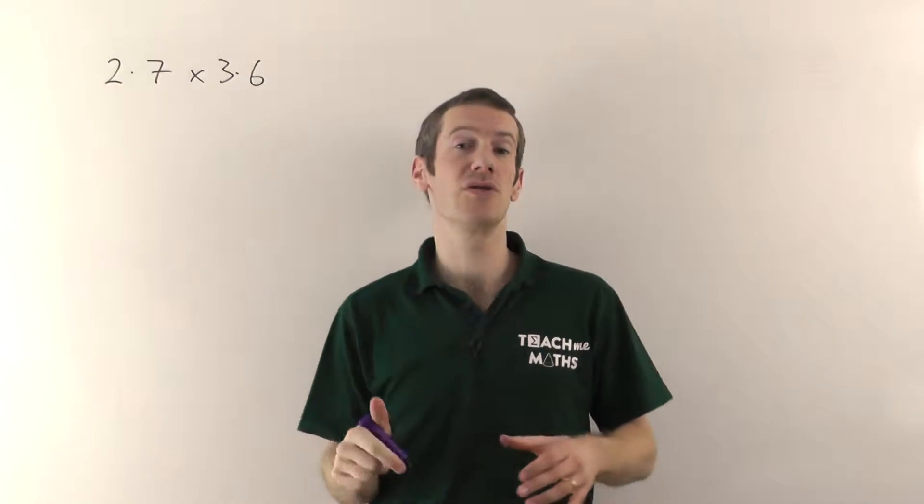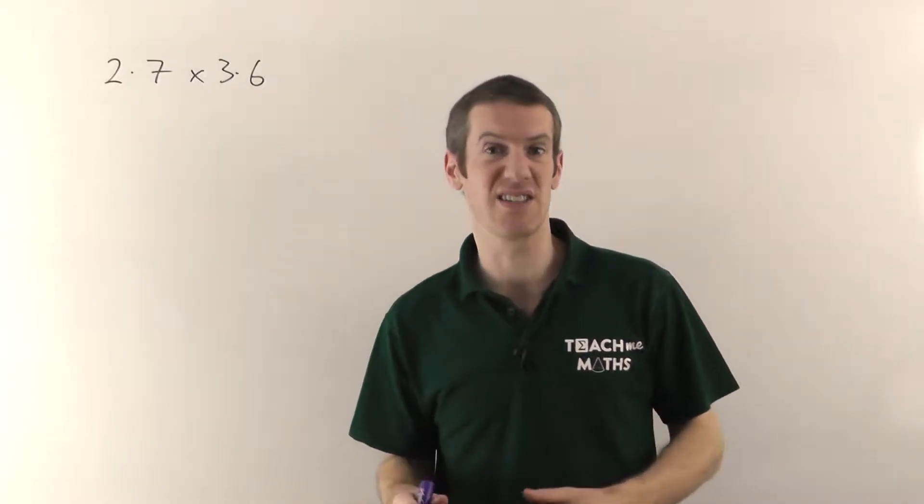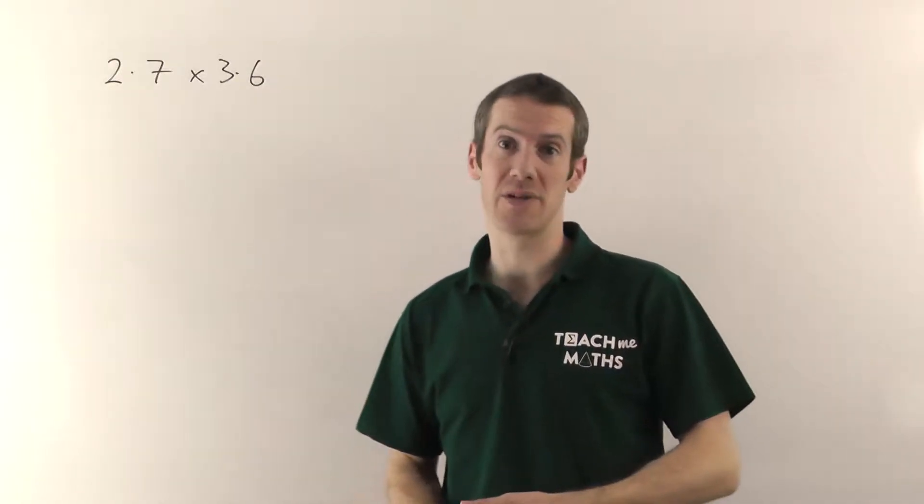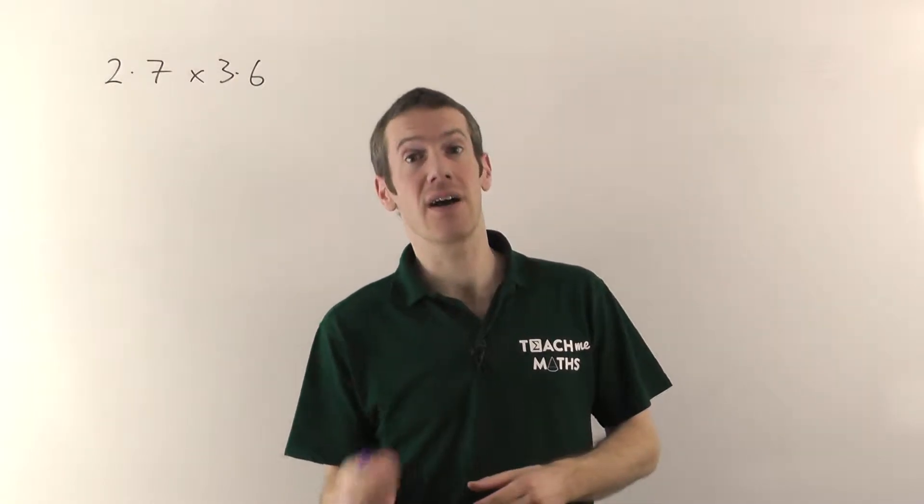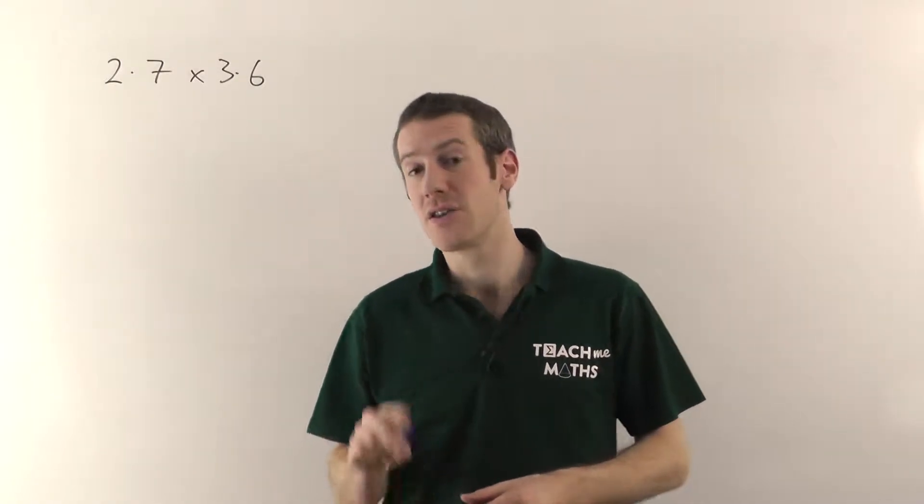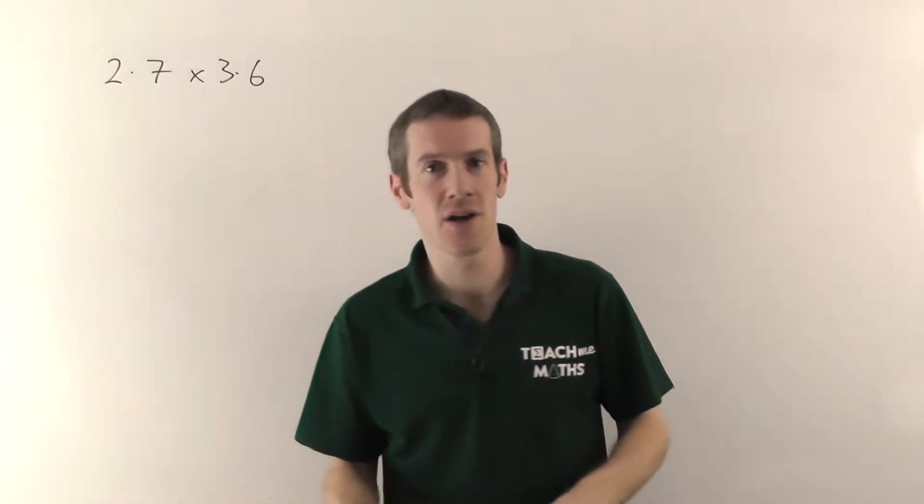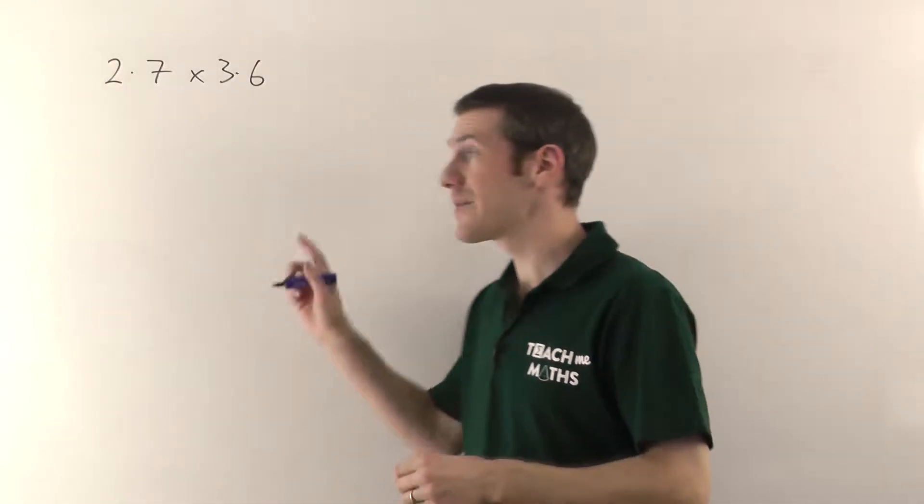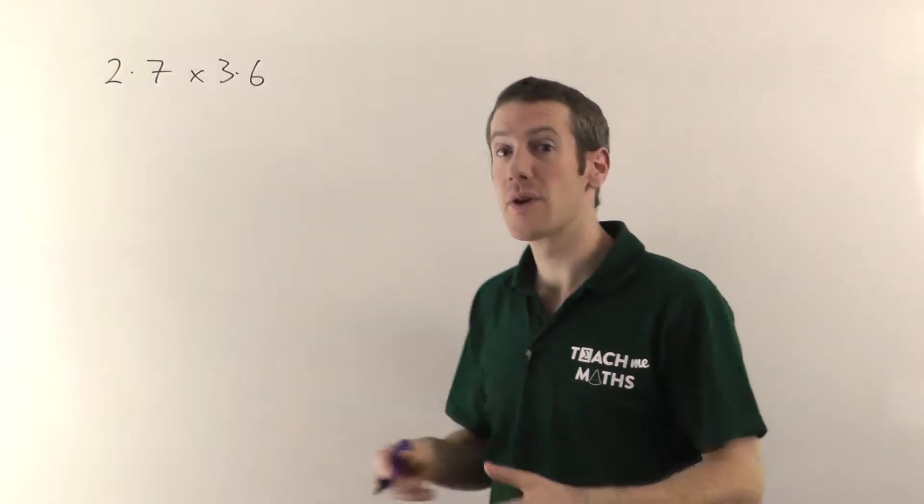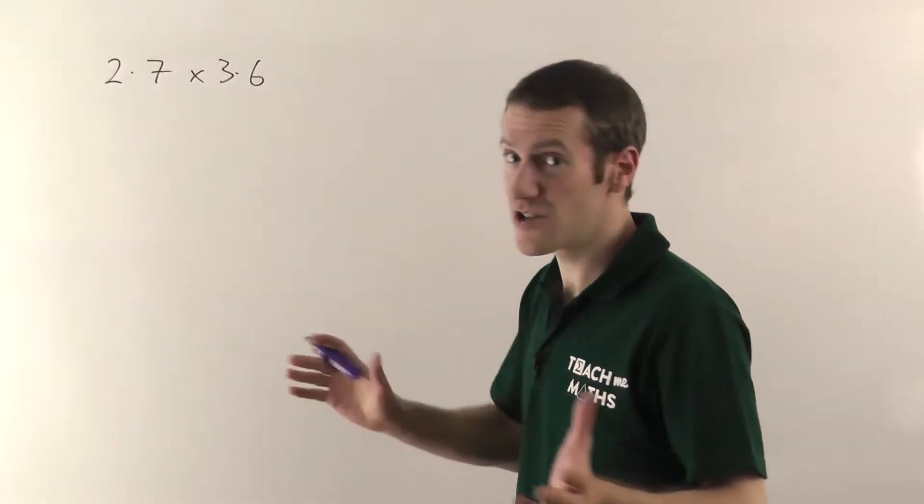Now in order to do this, you do need to know how to do what we call long multiplication. That's basically multiplying normal numbers together. If you're not sure how to do that, go and watch some of the multiplication videos. There's two main approaches for multiplication. You've got your traditional multiplication and your grid multiplication. I'm going to use grid multiplication here because a lot of people find that easier, but you can use the other one if you prefer.